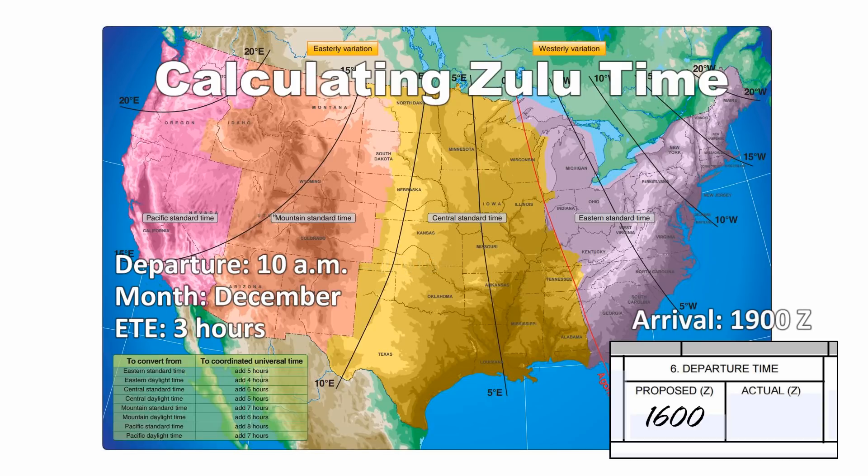But for practice, here's how we work it. Using central time, 1 p.m. is 1300 hours. Since you're still using central time, the offset remains at plus 6. 1300 plus 6 equals 1900 Zulu.